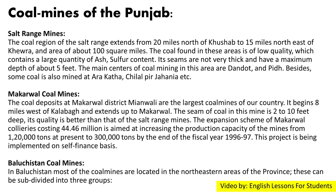Coal mines of Punjab — Salt Range mines: The coal region of the Salt Range extends from 20 miles north of Kishab to 15 miles north east of Kheora, covering an area of about 100 square miles. The coal found in these areas is of low quality, containing a large quantity of ash and sulfur. Its seams are not very thick and have a maximum depth of about five feet. The main centers of coal mining in this area are Dindot and Pid, besides some coal is also mined at Ara, Katha, Chilal, and Peer Jahania.